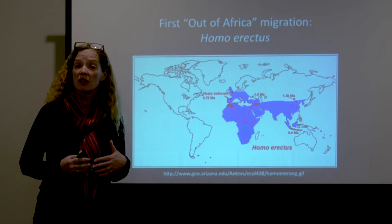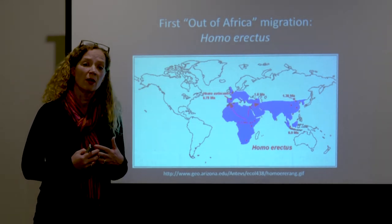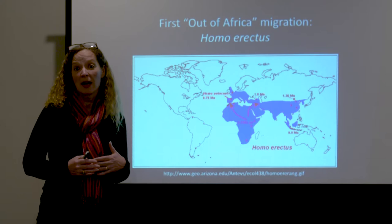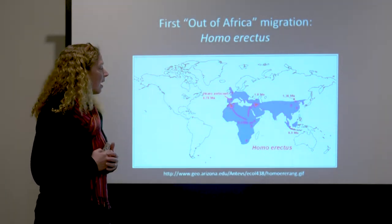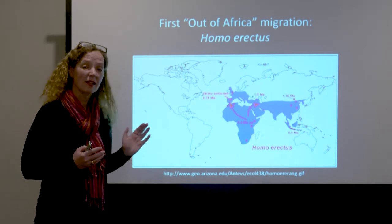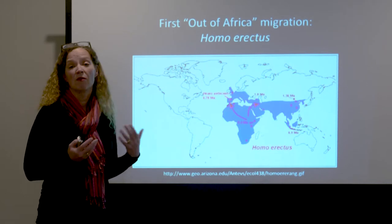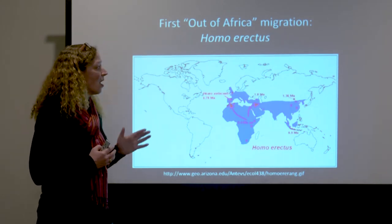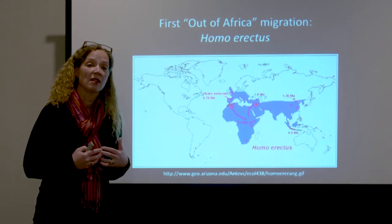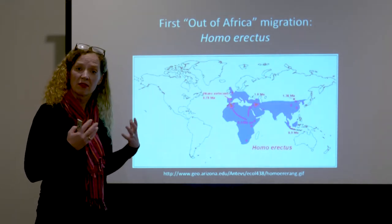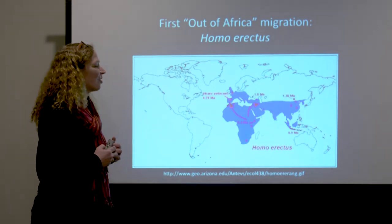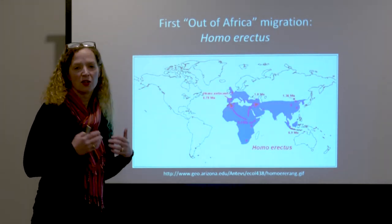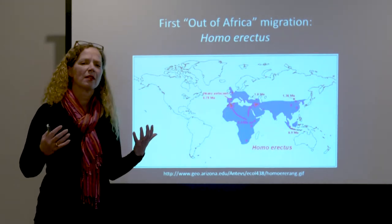The first out-of-Africa migration really began about two million years ago with Homo erectus, possibly some Homo habilis. There's lots of debate about how we classify these early hominins. Homo erectus leaves Africa about two million years ago — we see remains in Georgia and southern Europe dated to about 1.8 million years ago. Homo erectus reaches East Asia: Peking Man in China dated to about 1.4 million years ago, and around a million years ago in Java with Eugene Dubois and the Java Man. That was really the first out-of-Africa migration.